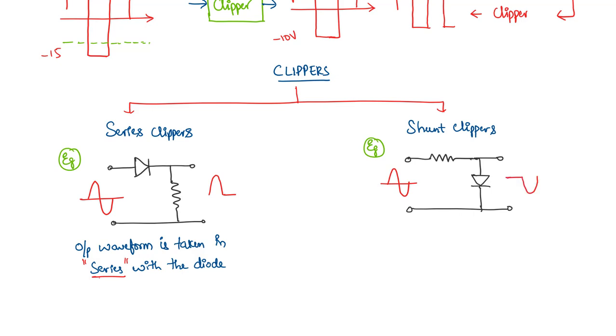Where only the negative half of the wave is coming at the output and the positive half of the wave is clipped. Because the diode is forward biased during the positive half of the cycle. Now this is called a shunt clipper because the output waveform is taken in shunt with the diode.